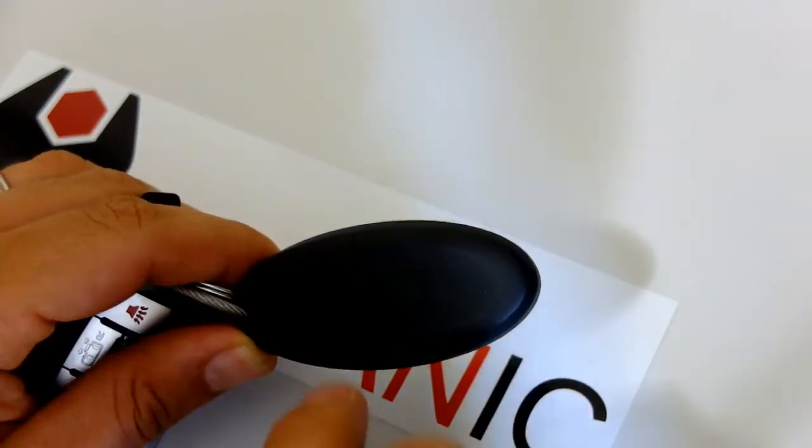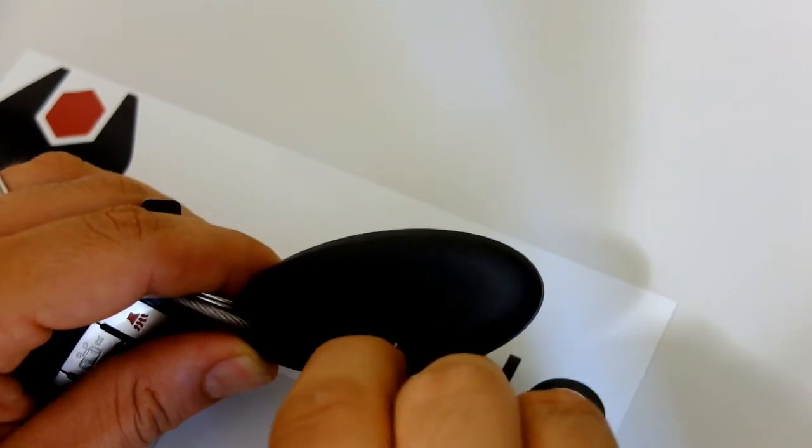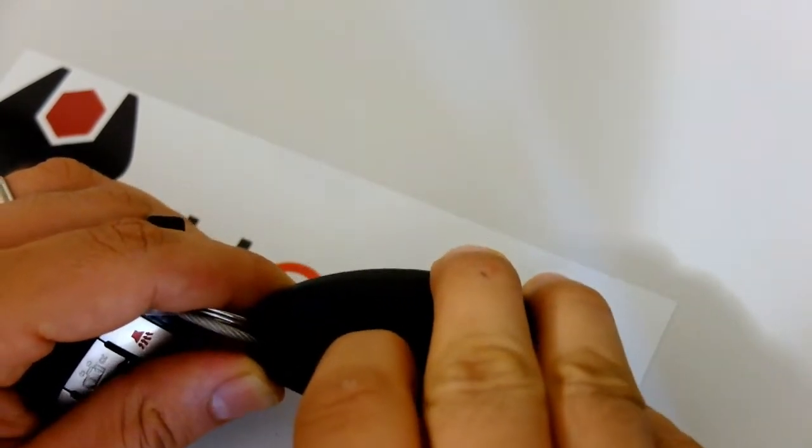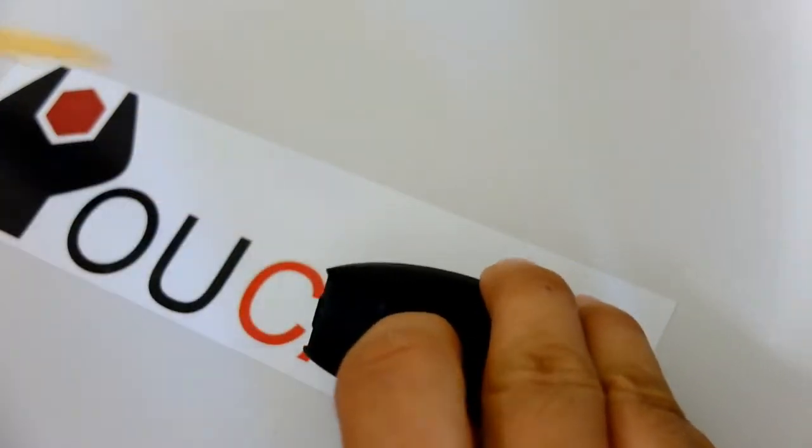So what you need to do is press on this little tab, pull it down and hold it. Like so. As you do that, now pull out the metal blade.